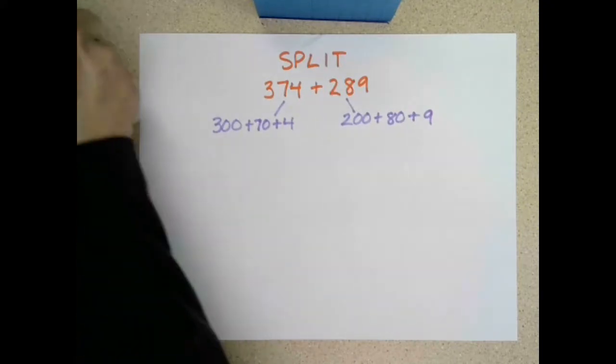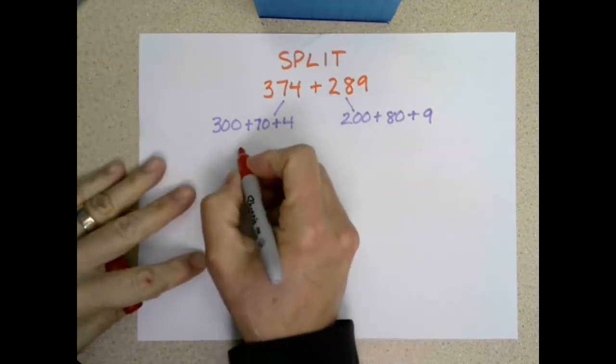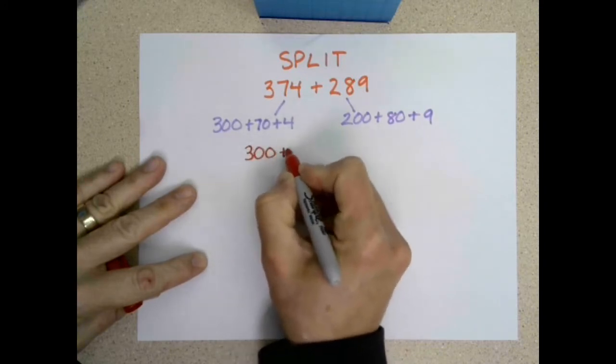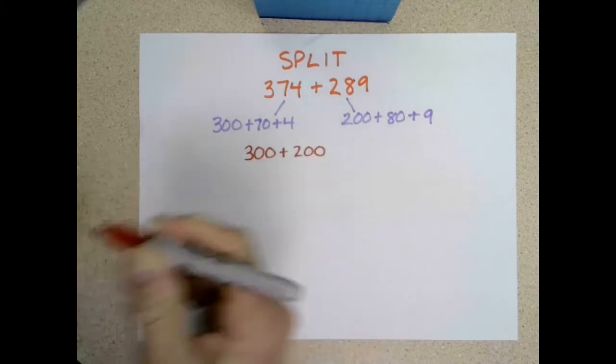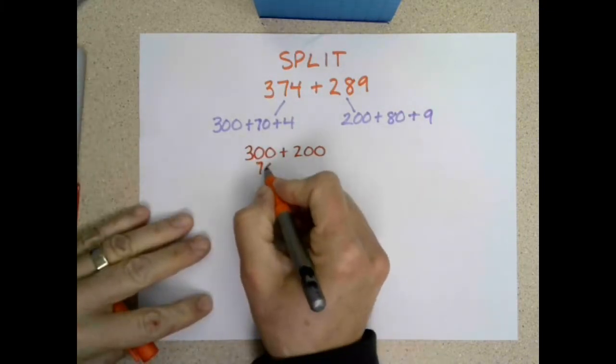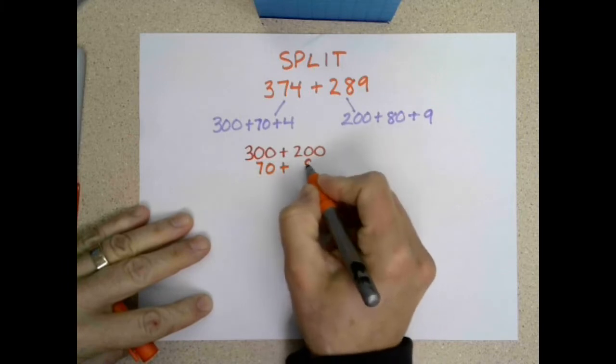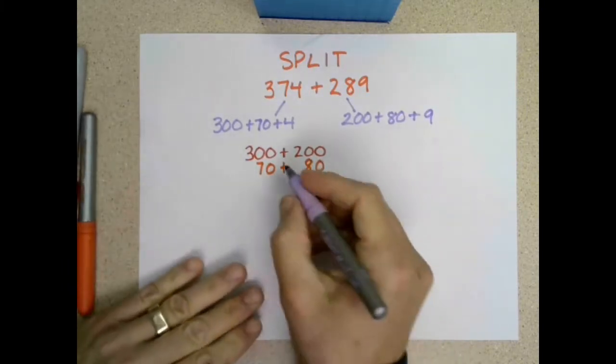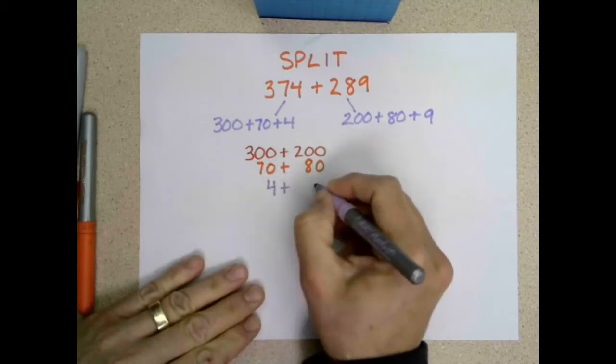I'll just use some different colors here to help keep the place value positions together. So we're going to have 300 plus 200, and we'll add the tens, 70 plus 80, and then we'll add the ones, 4 plus 9.